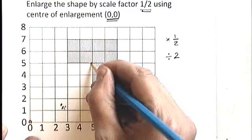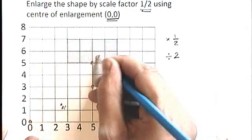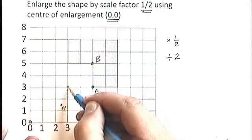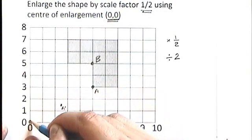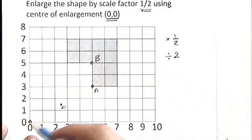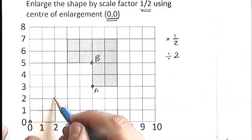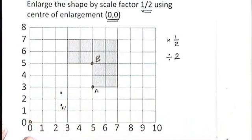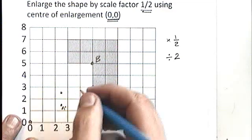If we choose this point here now, which is point B, this is one, two, three, four, five diagonal squares. So again, if I divide that by two and count from here one, two and a half, that's where B dashed is going to go.